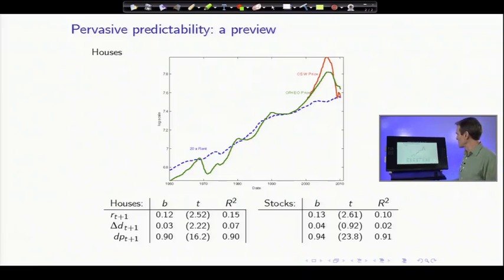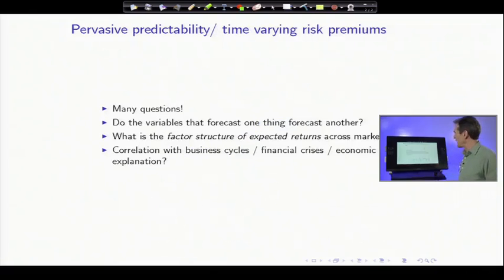In fact, I ran the regression. Here's the regression for houses, returns and rent growth on the price to rent ratio. This is stocks, returns and dividend growth on the dividend yield. And you can see the regressions are almost identical. So the same phenomenon is happening in every market that we go look at.